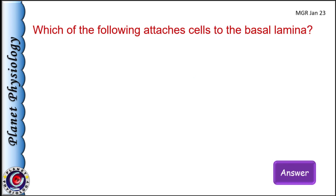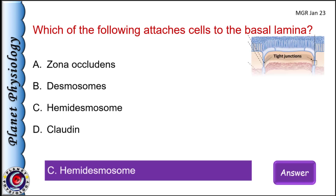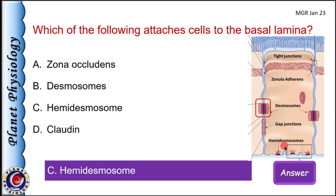Which of the following attaches cells to the basal lamina? A) zona occludens, B) desmosomes, C) hemidesmosomes, and D) claudin. The correct answer is C) hemidesmosomes. Another junction that attaches cells to the basal lamina is focal adhesion.